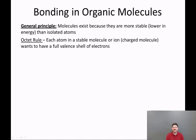So the guiding principle that is in my opinion one of the most important principles in all of chemistry is what's called the octet rule. The octet rule simply states that each atom in a stable molecule or ion, so an ion is also known as another word for a charged molecule, wants to have a full valence shell of electrons. What's a valence shell? A valence shell is simply the outermost shell of electrons.